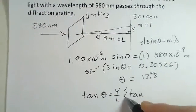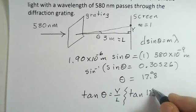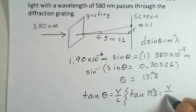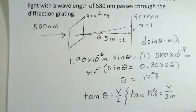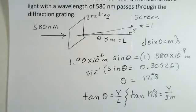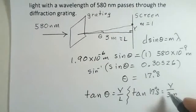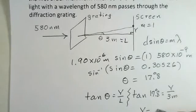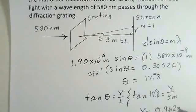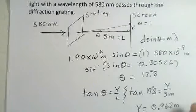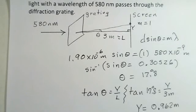So tangent of 17.8 degrees equals the Y distance we're trying to calculate. 3 meters is the distance from the grating to the screen. So take the tangent of 17.8 on your calculator, multiply by 3 meters on both sides, and I arrive with the Y of 0.962 meters. That's a pretty healthy distance. 0.962 meters, 96 centimeters. But that's a result for this calculation for this particular wavelength of light.